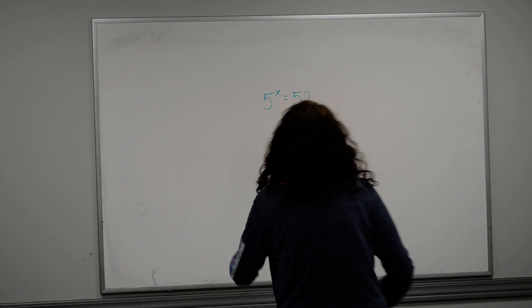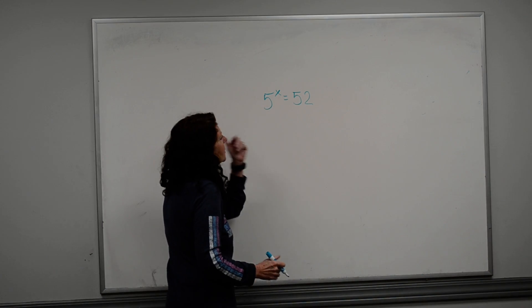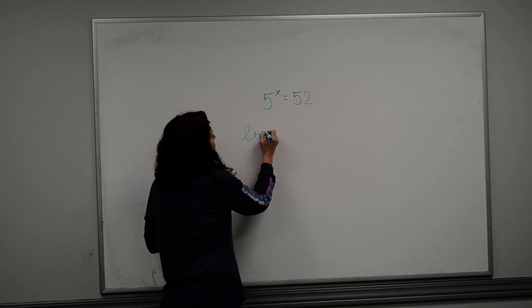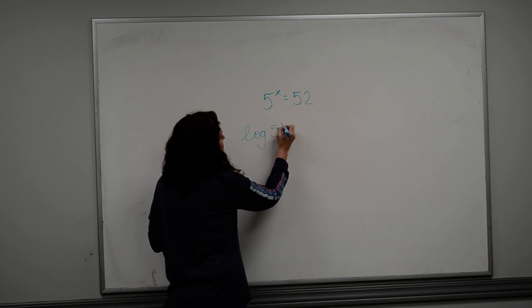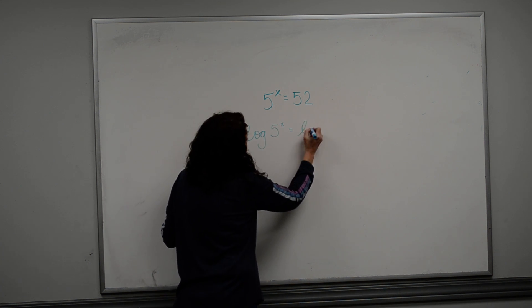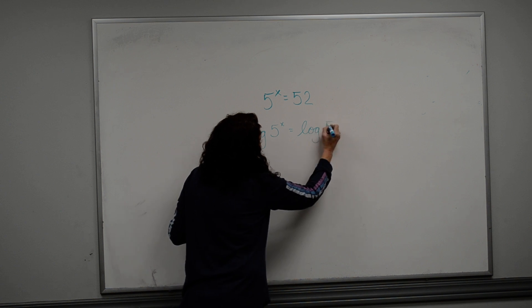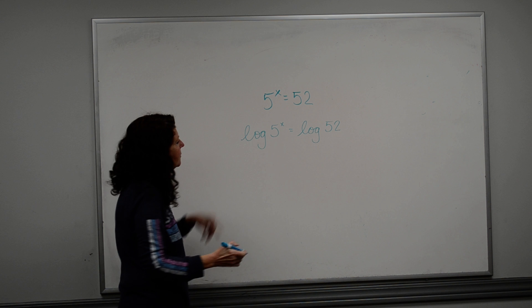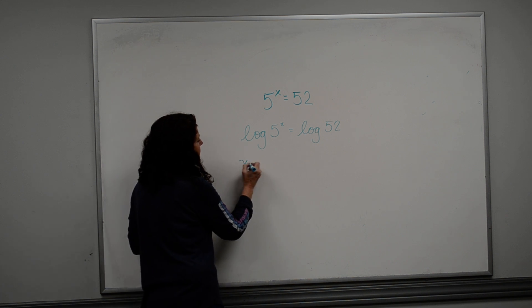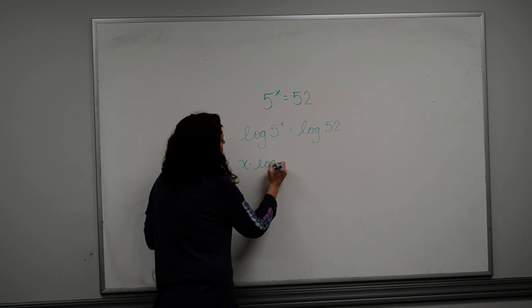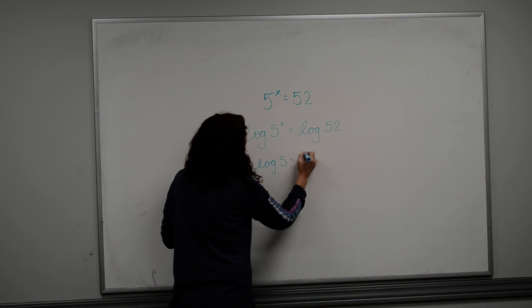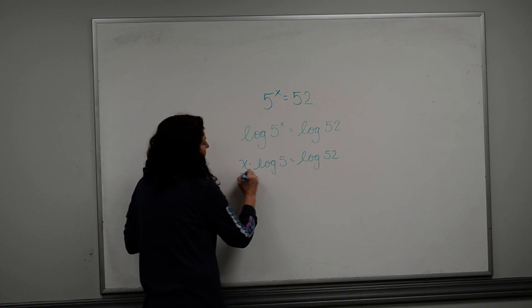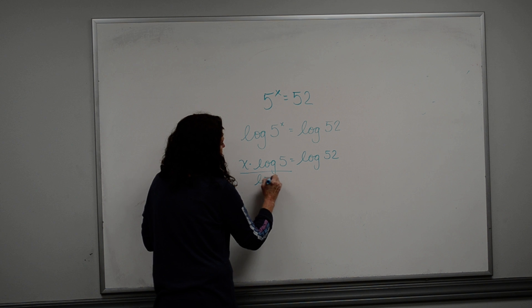All right, basically you cannot make the same base number, so you have to take the logarithm on both sides. So I'm going to take the log of 5 to the x power is equal to the log of 52, but the exponent comes to the front, so I have x times the log of 5 is equal to the log of 52.